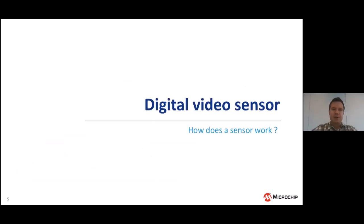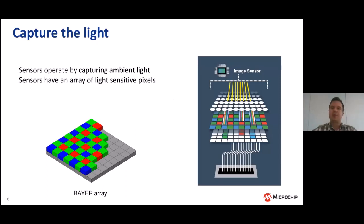Let's start from the beginning: what is a digital video sensor and how does it work? How does it obtain the data we need for taking a photo? On the right side of the slide, you will see an explanation of the image sensor — how light enters the sensor through photosensitive cells and how the light is split into different color types. Inside the sensor, we have different photo cells sensitive to green, blue, and red, which convert the absorbed light into data.